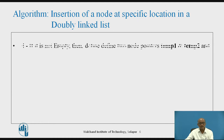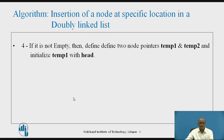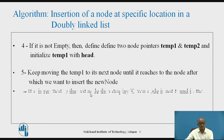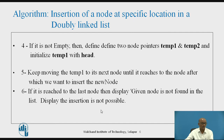If the list is not empty, meaning some nodes already exist, then we have to traverse to the particular location. For that we will use two temporary pointers, temp1 and temp2. We initialize temp1 to head so that temp1 holds the address of the first node. We move temp1 until it reaches the node after which we want to insert the new node. If it reaches the last node and we could not find the specific location, then we display that the node cannot be inserted.